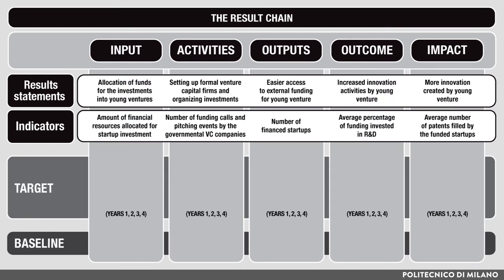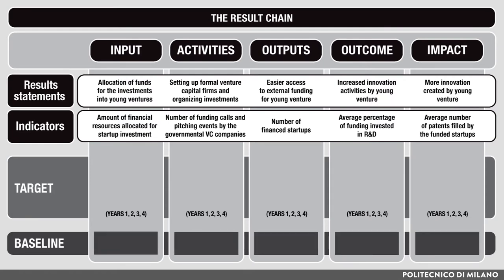Here are a few simplistic numbers. We can assume that no governmental resources were devoted to direct funding of startups, no governmental venture capital existed, and thus no startup received any funding from the government before the policy program, leading to the first three baseline levels equal to zero. Then we can assume that before the policy, an average startup had invested around 10% of its revenues into R&D, which had led to around 0.8 patents per startup on average.